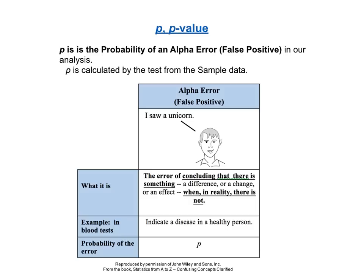The next of the four concepts to explain is p, the p-value. p is the probability of an alpha error, or false positive error — it is the error of seeing something that isn't there: the difference, change, or effect which is described by the null hypothesis. The value of p is calculated by the test using the sample data.